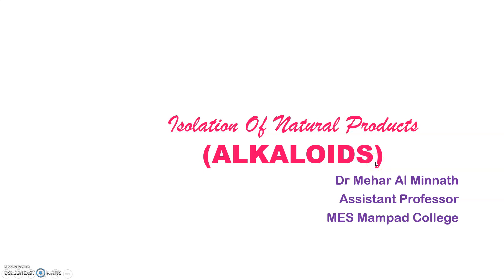How alkaloids are isolated from plant materials. Alkaloids are nitrogen-containing compounds; they are alkaline and basic in nature. Not all plants have all alkaloids, and not all alkaloids are present in a particular plant. Plant materials differ in the alkaloids they contain and their quantities, so you have to choose the plant material and part accordingly to get a good yield of the natural product.